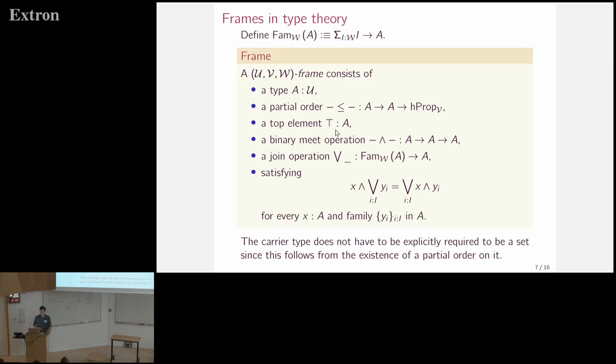And to define the notion of a locale in type theory, we define a frame. And this notation we use here, FEM sub W A, is the type of families over some type A whose index sets live in universe W. And a frame is a lattice with finite meets, arbitrary joins, and in which finite meets distribute over the arbitrary joins. But in type theory, we need to be a bit careful about the universes. So we parameterize our notion of a frame by three universes, U, V, and W. U for the carrier set, V for the truth value of the partial order, and W for the index types of families over which the joins are defined.